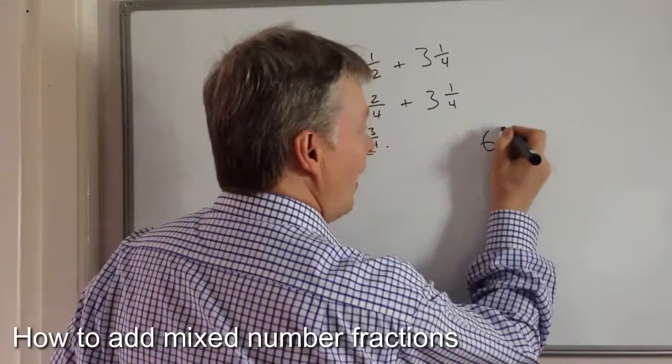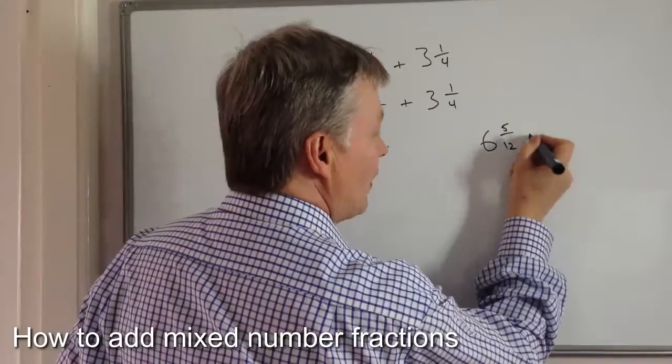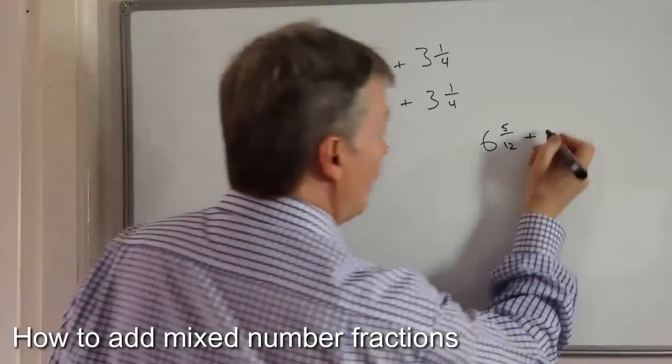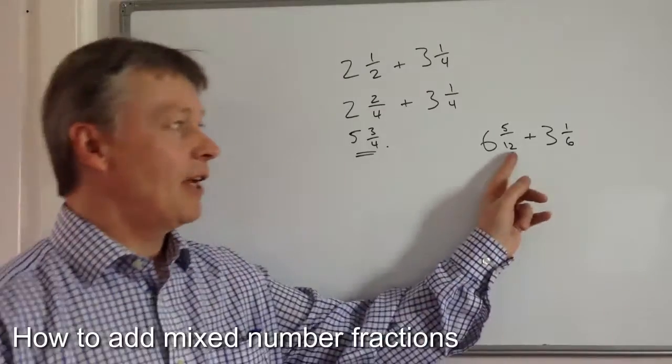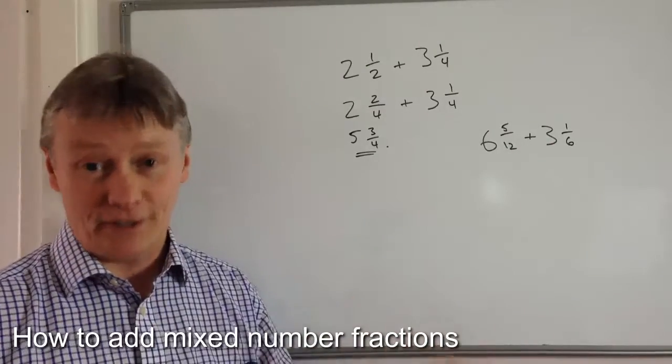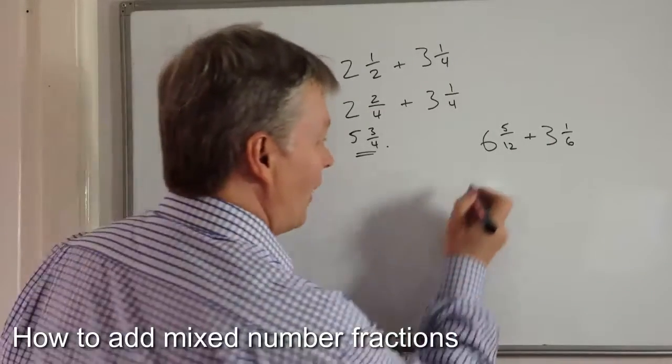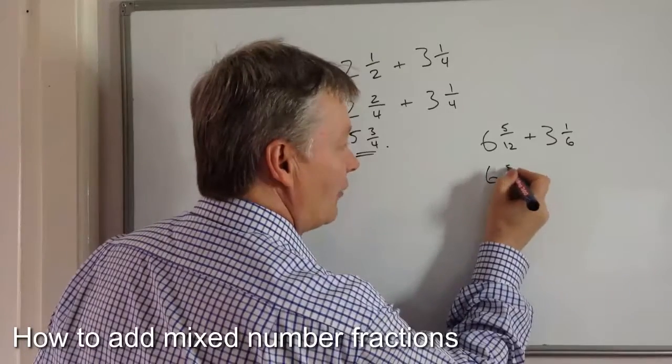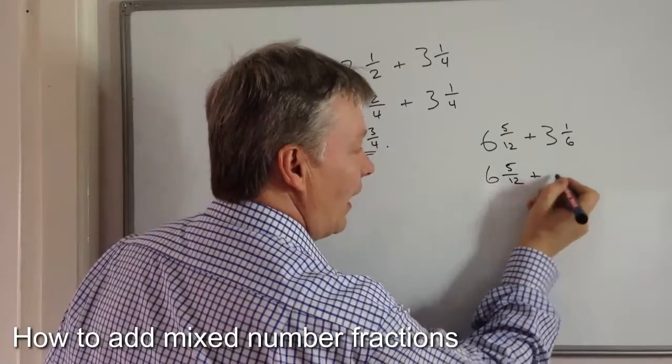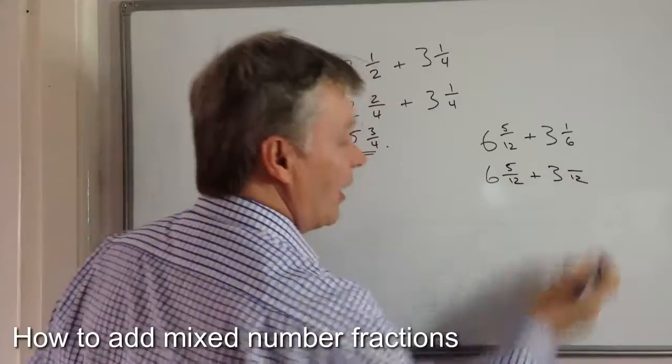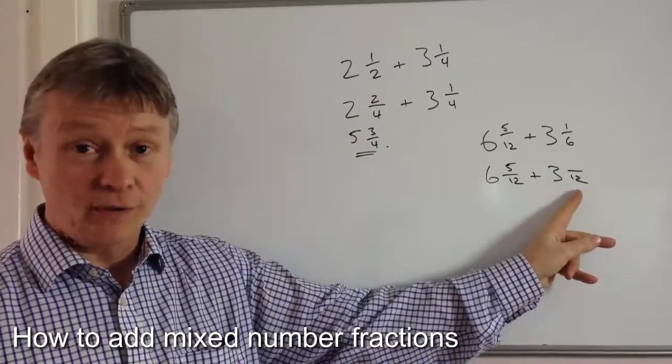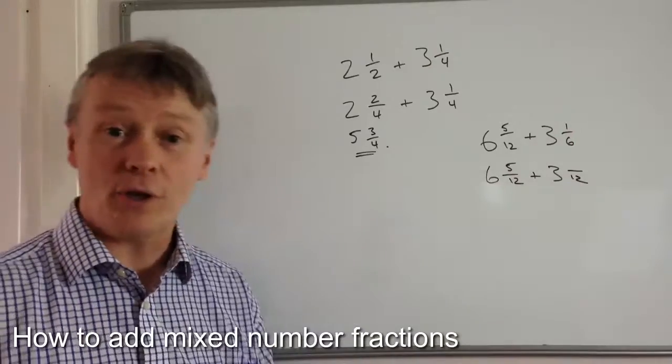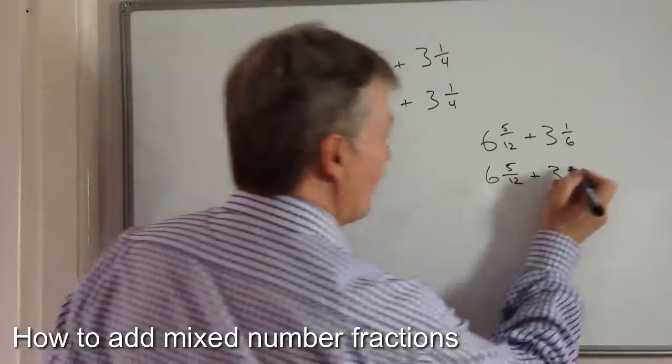So I've got six and five twelfths. I'm going to add that to three and one sixth. I need to make sure the bottom numbers are the same. So I'm going to make it twelve. So six and five over twelve, I'm going to add that to three something over twelve. I've multiplied that six by two to get to twelve. So I'm going to multiply the top by two as well. So that's going to be two.